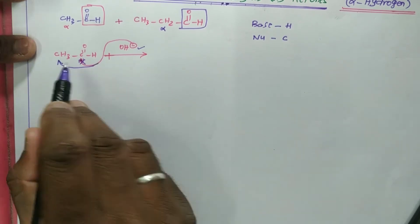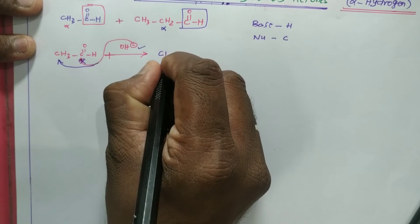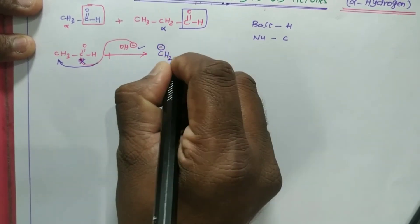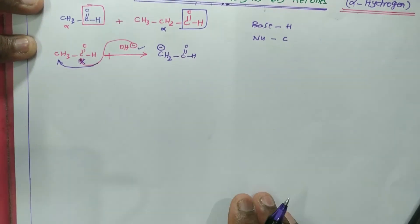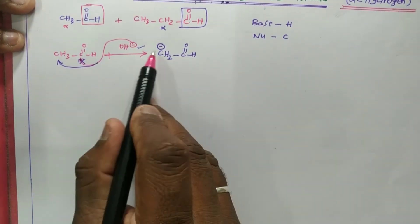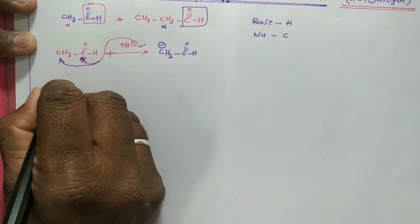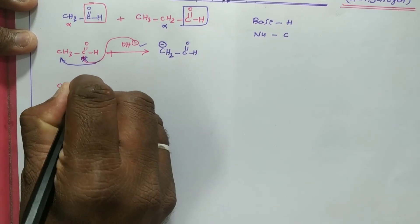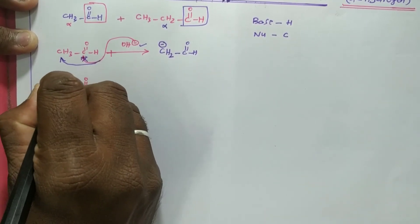The OH⁻ base picks up the alpha hydrogen. After the hydrogen is removed, we get a nucleophile: the enolate carbanion ⁻CH₂CHO (CH₂⁻ C=O). This nucleophile is now formed from ethanal.